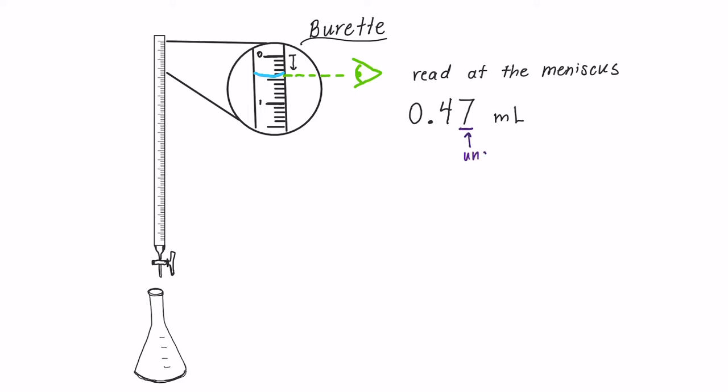So our second decimal place is our uncertain digit. You should record to the second decimal place to make sure that we have the most precise measurement possible. So 0.47 milliliters is the initial volume.